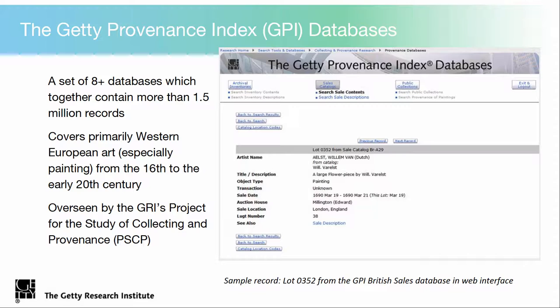What we call the Getty Provenance Index is actually a set of — depending on how you count it — 6, 8, or 12 multiple databases, which together contain more than 1.5 million records. I'm showing you an example of one record, lot 0352 from the British sales database, and this is how it looks in the web interface. The databases cover primarily Western European art, especially painting, and they span from the 16th to the early 20th century.